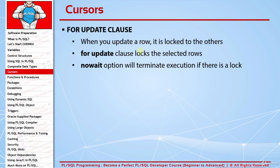By default the option is WAIT, meaning the cursor waits indefinitely. You can also write WAIT explicitly and specify a number of seconds. For example, WAIT 30 will wait up to 30 seconds; if the rows are still locked after 30 seconds it returns an error. This lets you know your job didn't complete so you can run the code again.